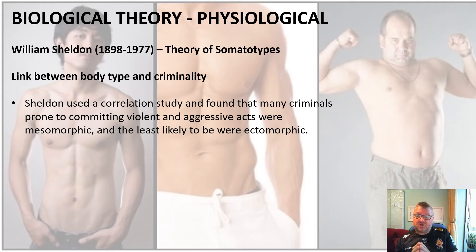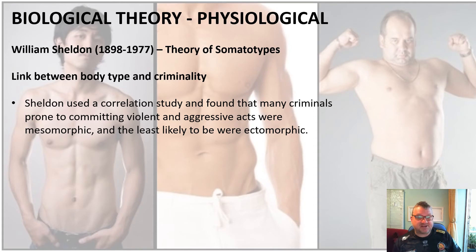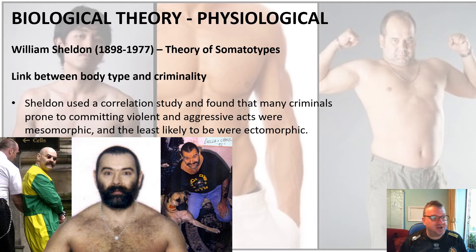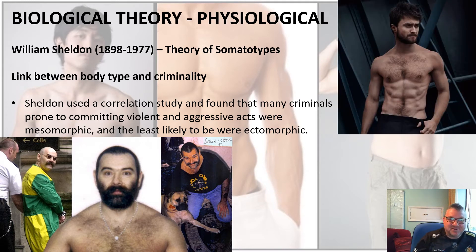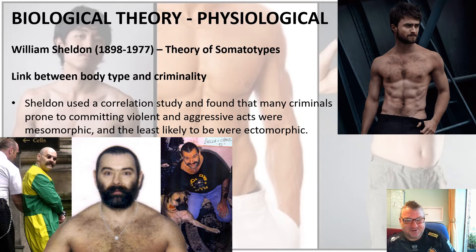Sheldon used a correlation study and found that many criminals prone to committing violent and aggressive acts were mesomorphs. They are more likely to be mesomorphic and least likely to be ectomorphic. So mesomorphic is your criminal shape and ectomorphic is your least criminal shape. Here we see a classic mesomorph — Charles Bronson, one of the most dangerous criminals in the UK. He conforms to the mesomorphic view. And here we see Daniel Radcliffe — even though he has muscle, he's still an ectomorph, thin and not very broad, and therefore unlikely to be criminal according to Sheldon.